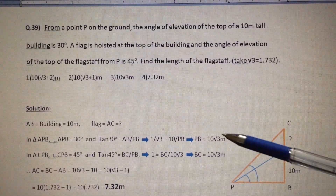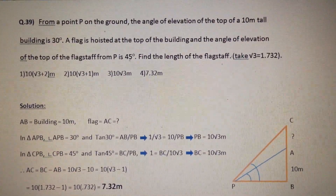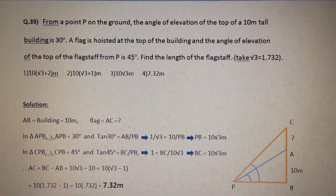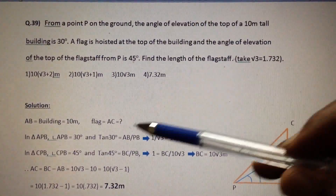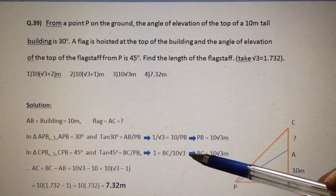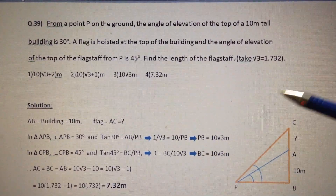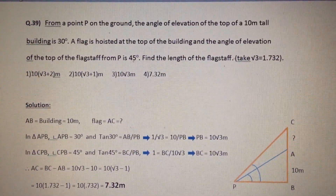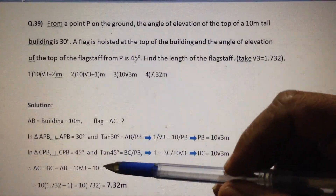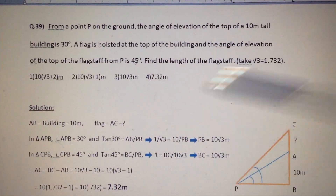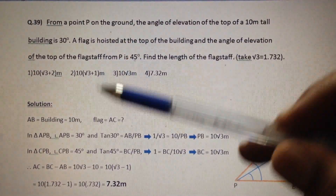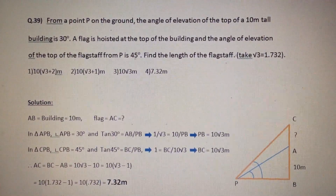Therefore PB = 10√3 meters. Similarly, in triangle CPB, angle CPB is 45 degrees. tan 45° = BC/PB, so 1 = BC/(10√3), therefore BC = 10√3. Now AC = BC - AB = 10√3 - 10 = 10(√3 - 1). Since √3 = 1.732, substituting gives AC = 7.32 meters. Therefore the answer is option number 4.